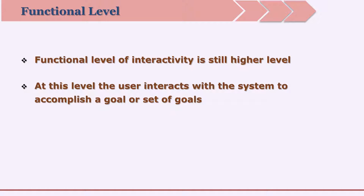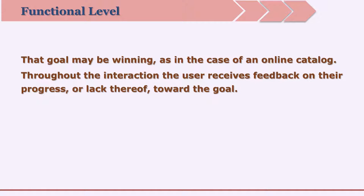Functional interactivity is provided by a system which presents an environment to the learner. The learner needs to interact with this environment so as to accomplish some goals. Throughout this learning process, the learner is given feedback on accomplishment of goals for every progress made. The goal may be winning, as in the case of an online game. Throughout the interaction, the user receives feedback on their progress toward the goal.